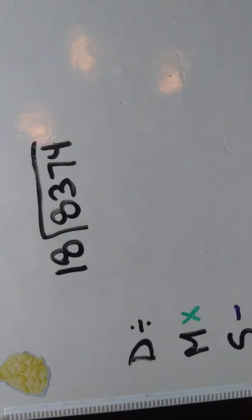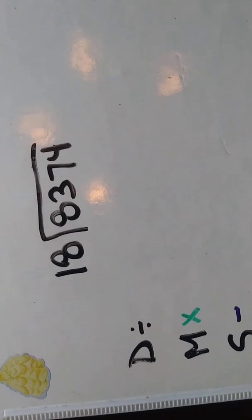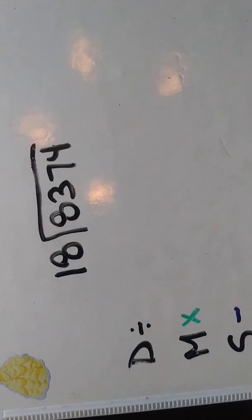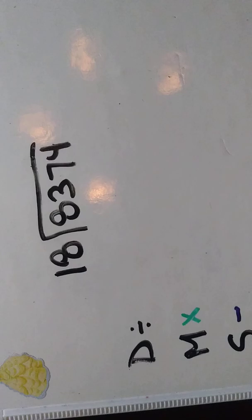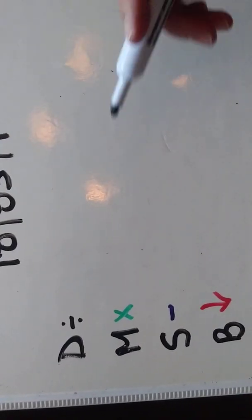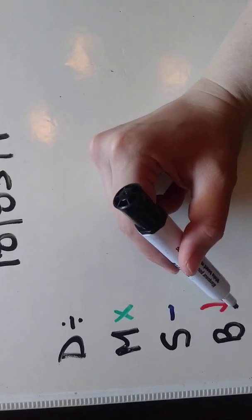The next example in this series of long division method two is using the same method but with a double-digit divisor. So we're going to try the example of 8374 divided by 18 using the same method as discussed in the previous videos using dangerous monkeys swing backwards.